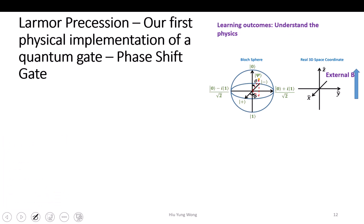So let's look at what will happen to the system. We just learned the Schrödinger equation. We say psi equals alpha|0> plus beta|1>, a very general state on the Bloch sphere. And the Schrödinger equation tells us that i*H-bar * (partial psi / partial t) equals H*psi. This is the Schrödinger equation.